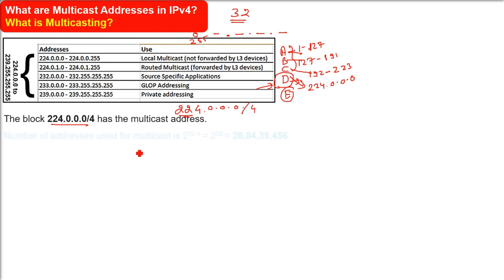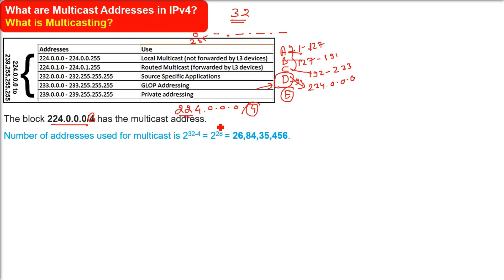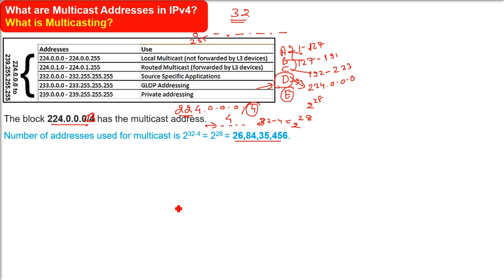We don't need a subnet mask here because this is multicasting. The number of addresses used for multicast: since 4 bits are already used for the network, we have 32 minus 4 remaining for the host, which is 2 to the power 28. So the number of possible addresses in Class D is 268,435,456 — a very huge number.